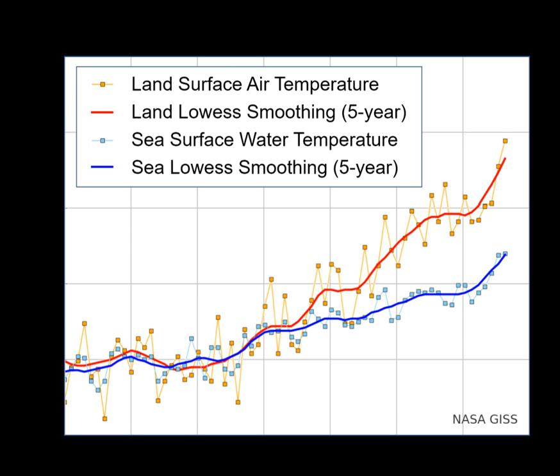Air masses in the Earth's atmosphere are highly modified by sea surface temperatures within a short distance of the shore. Localized areas of heavy snow can form in bands downwind of warm water bodies within an otherwise cold air mass. Warm sea surface temperatures are known to be a cause of tropical cyclogenesis over the Earth's oceans. Tropical cyclones can also cause a cool wake due to turbulent mixing of the upper 30 m of the ocean.